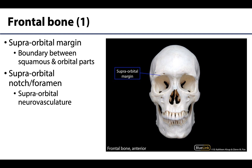The superorbital margin is the boundary between the orbital parts and the squamous part of the frontal bone — roughly where we'd consider the brow ridges. As part of the superorbital margin, you'll have either a notch or a foramen. On this particular donor there's actually both: one superorbital foramen and one superorbital notch. You could have one of each, or both foramina, or both notches. What moves through this region is the superorbital neurovasculature, including the superorbital nerve, which provides cutaneous or sensory innervation of the surrounding skin.